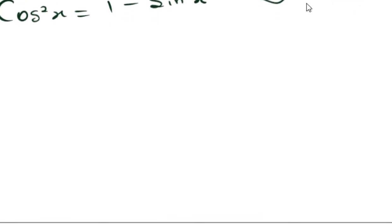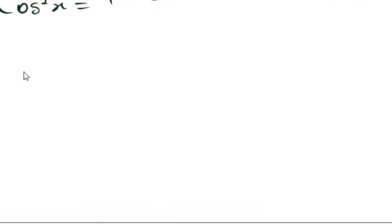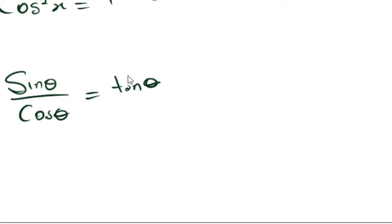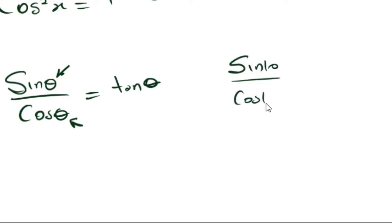Another identity you also need to remember is this: the division of sine theta over cos theta gives you tan theta. One thing you also need to remember about this is that the values substituted in terms of theta must always be the same. So sine theta over cos theta gives you tan theta.